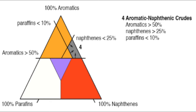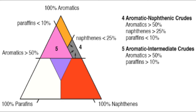You now see the gray shaded region, which is essentially the type 4 aromatic naphthenic crudes region. We can now identify the region for type 5 crude oils — aromatic intermediate crudes — bounded by two lines. You can see the purple triangle bounded by paraffins greater than 10 percent and aromatics greater than 50 percent.